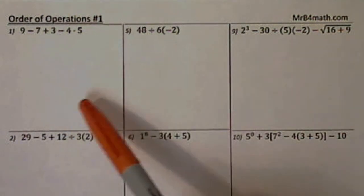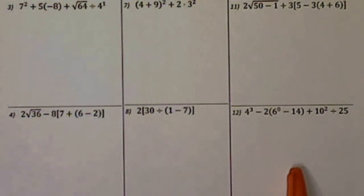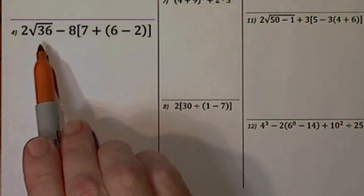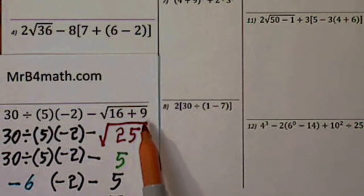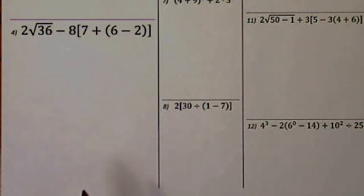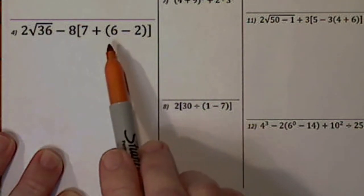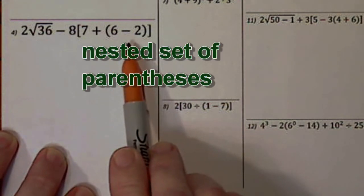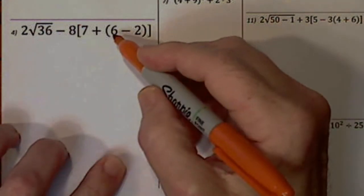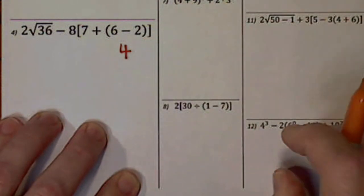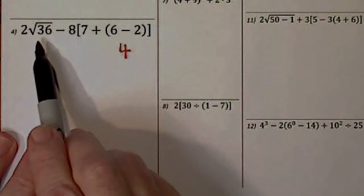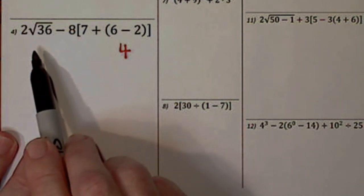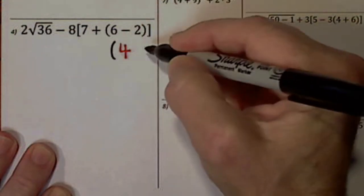We have the grouping symbol of the radical sign, but there's nothing within it to combine — unlike the previous problem where we combined 16 and 9 to get 25. We have a grouping symbol, and within it there's another set of parentheses — we call this the nested set, and you always begin with the innermost set. So 6 and negative 2 combined give a 4. I could take the square root of 36 since it's outside this set, but for clarity I'll do just one operation on the first line.